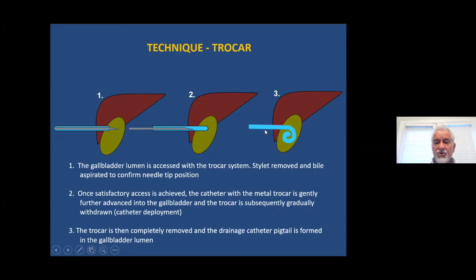Once the catheter is in place, securing it with suture to the skin, stay-fix, or tapes in such a way that inadvertent pulling by the patient, nurse, or anyone else is not possible or at least becomes difficult. The advantage of putting a stitch in the skin and anchoring the catheter is that when the stitch gets pulled, the patient experiences pain, drawing attention to the catheter, which may then be secured.